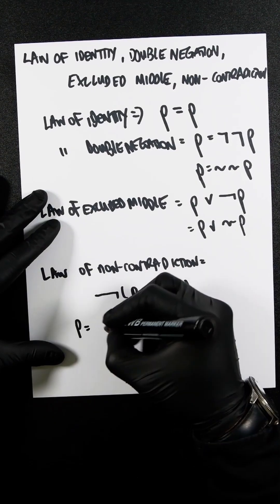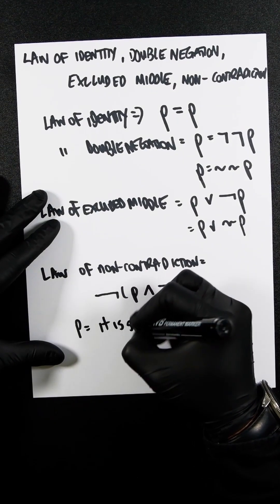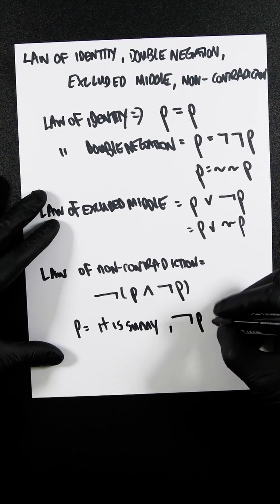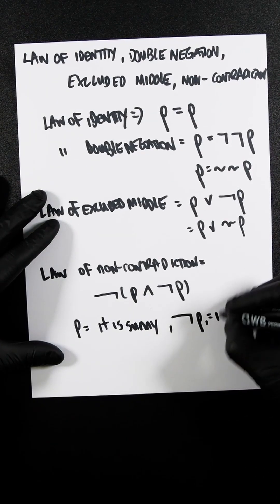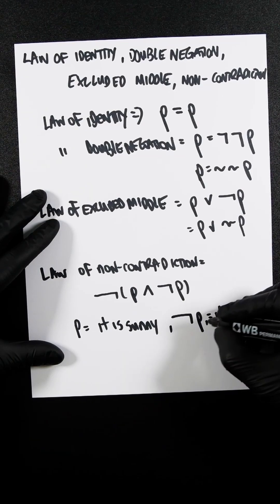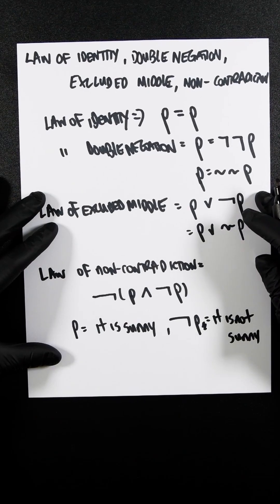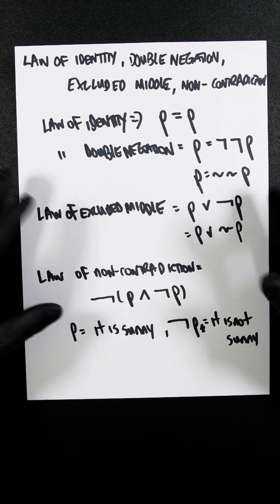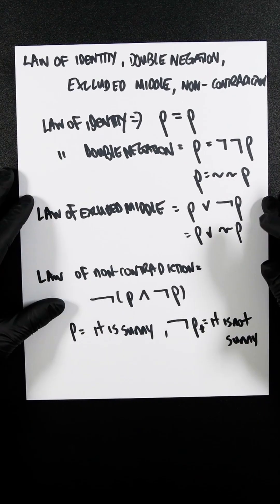For example, P is it is sunny and not P is obviously it is not sunny. So another very basic one and very obvious, cannot be both true and false at the same time.